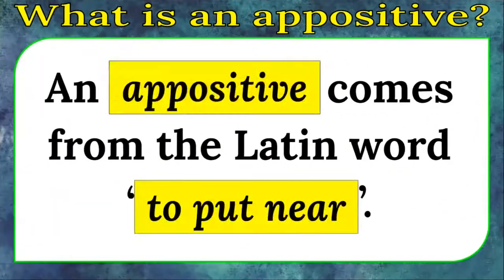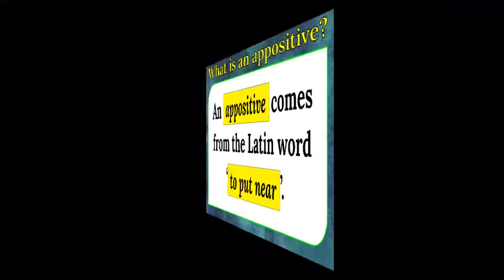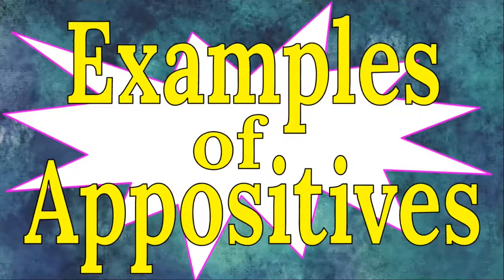An appositive comes from the Latin word meaning "to put near." An appositive can be used by another noun. Let's look at some examples of appositives.